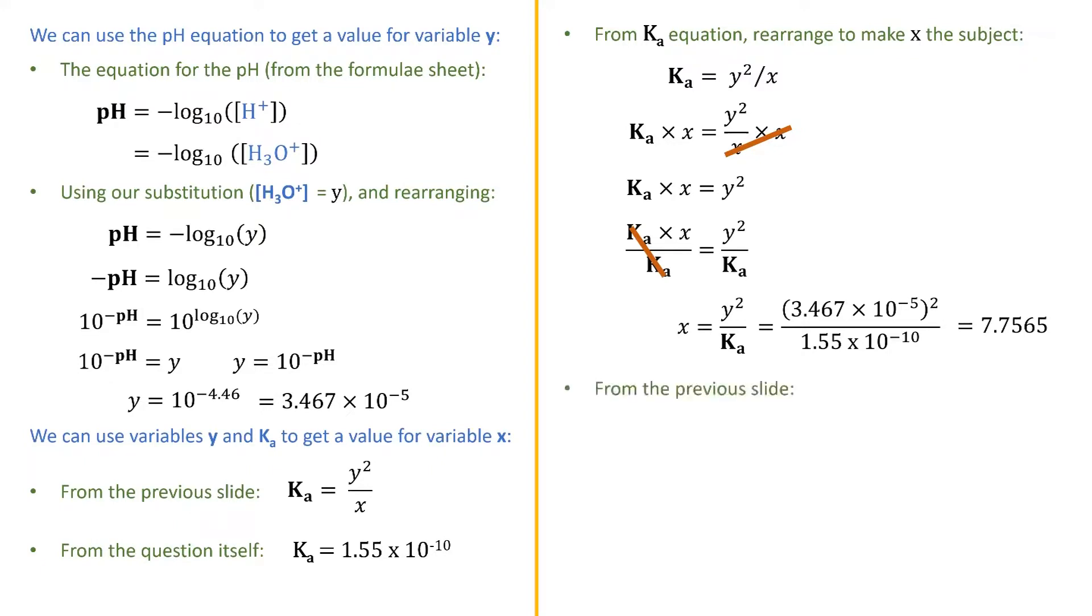Now, we remember from the previous slide that the Ksp value is just X squared. Therefore, we can plug in the value we just determined, square it, and get 60.163, which, rounded to one decimal place, is 60.2, and therefore means that option C is our final answer.